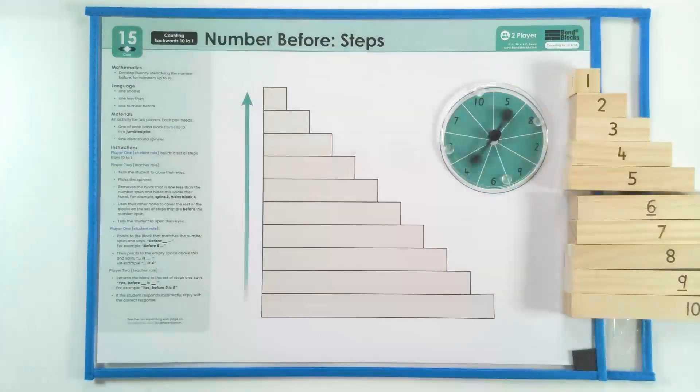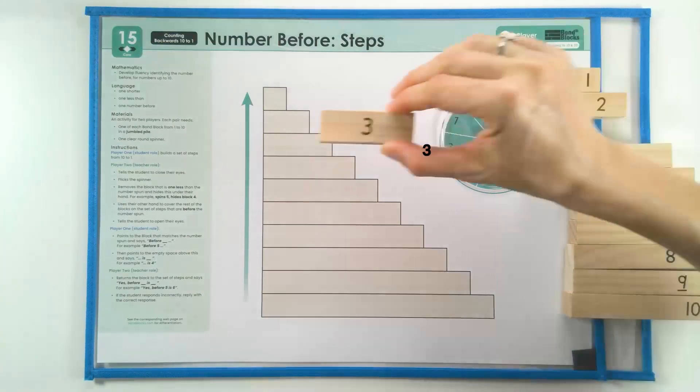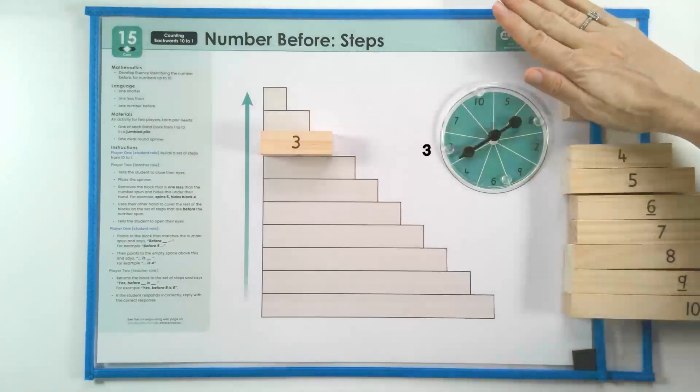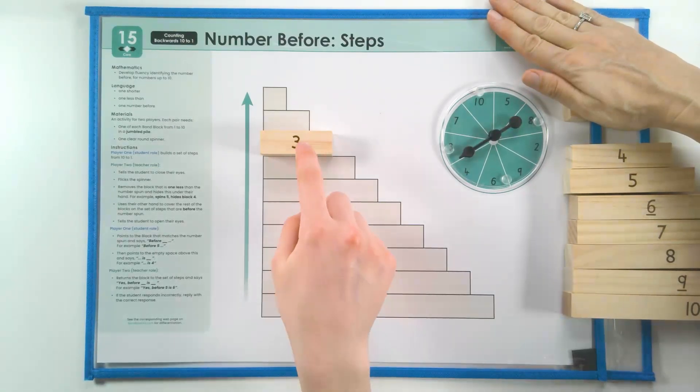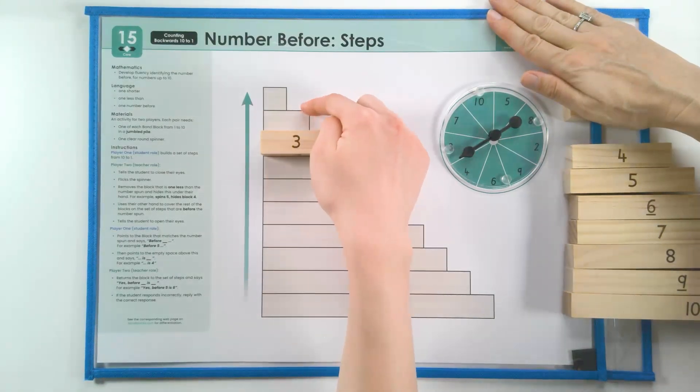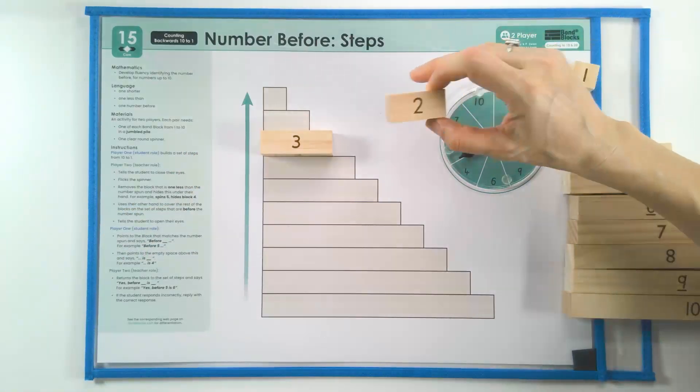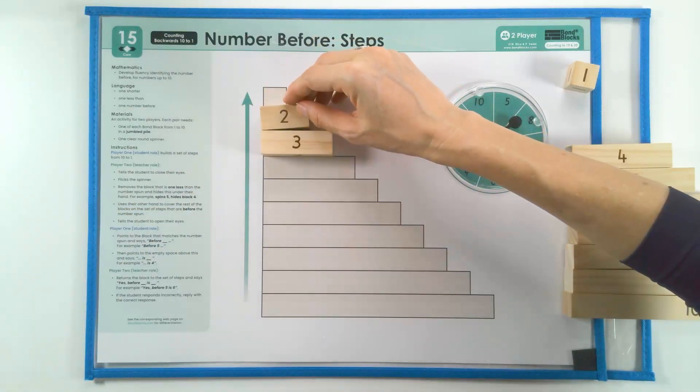So Karis, you close your eyes. I place the block that matches the one spun and cover the answer. Open your eyes. Before three is two. Before three is two. Yes, before three is two.